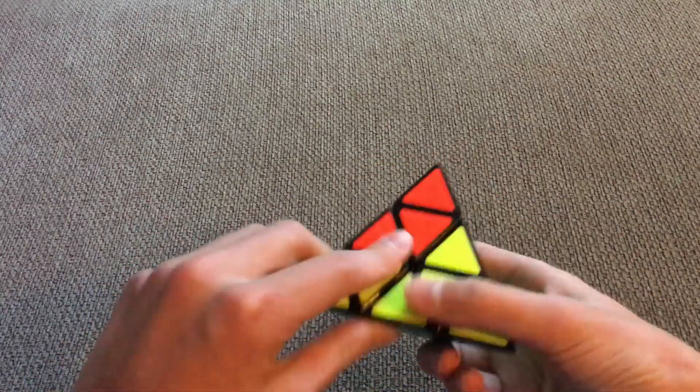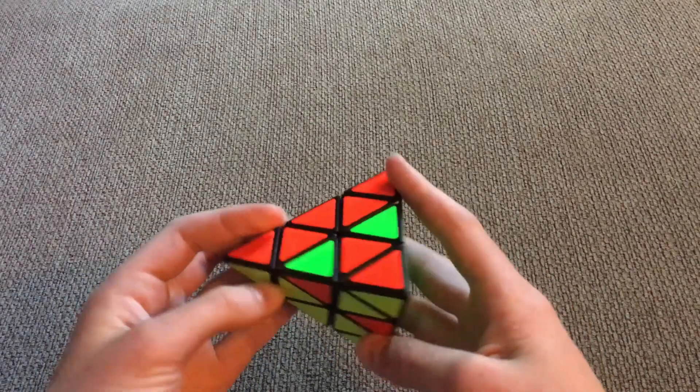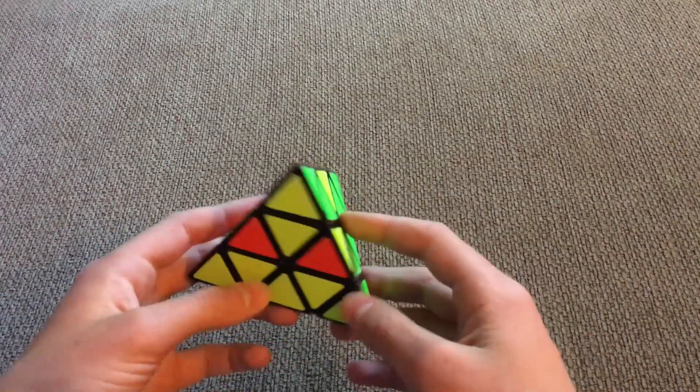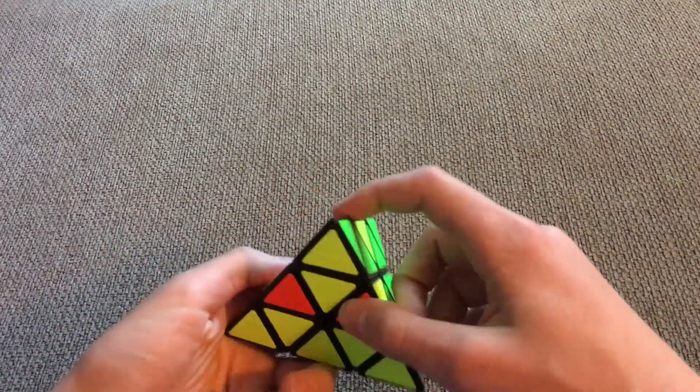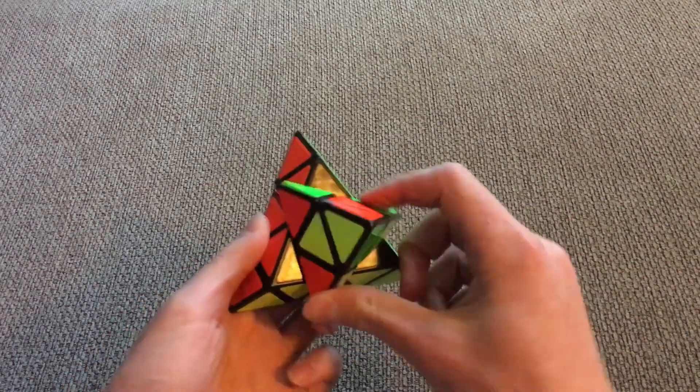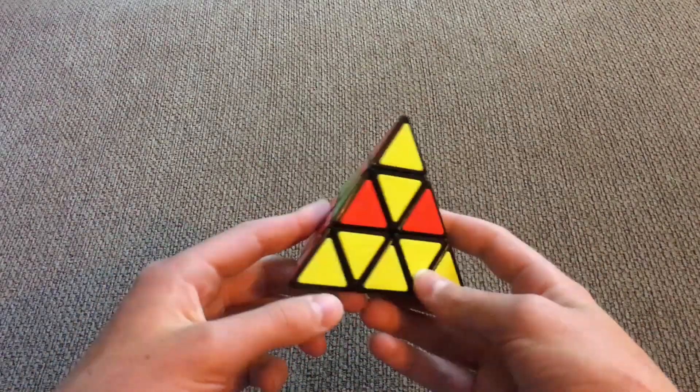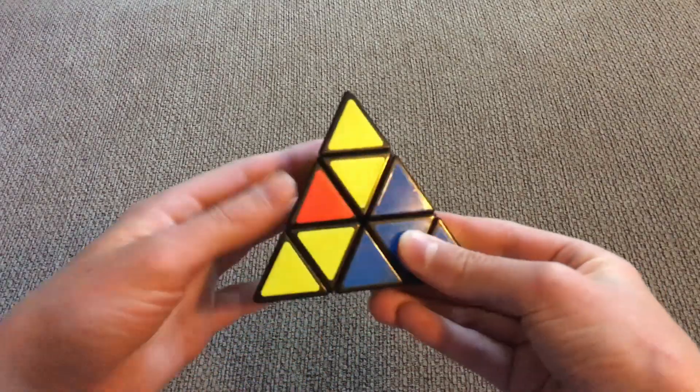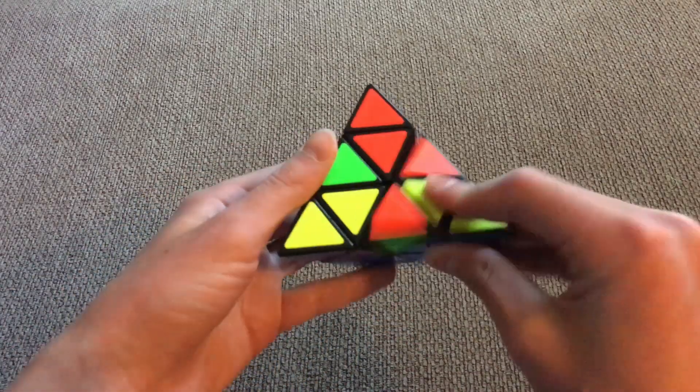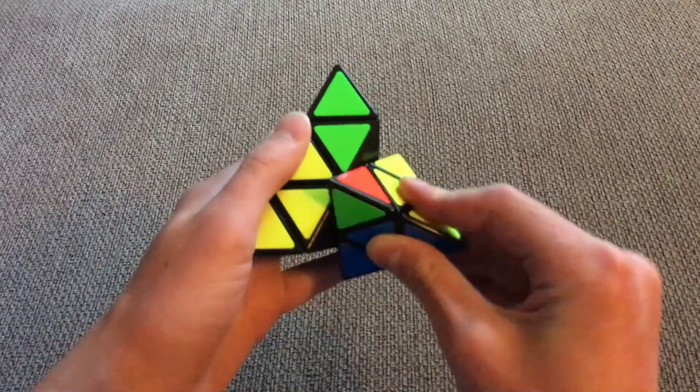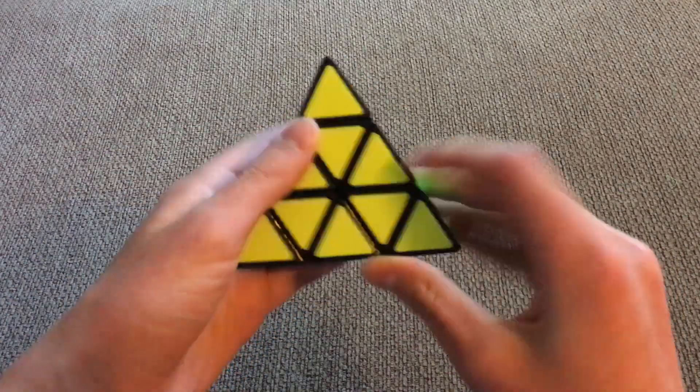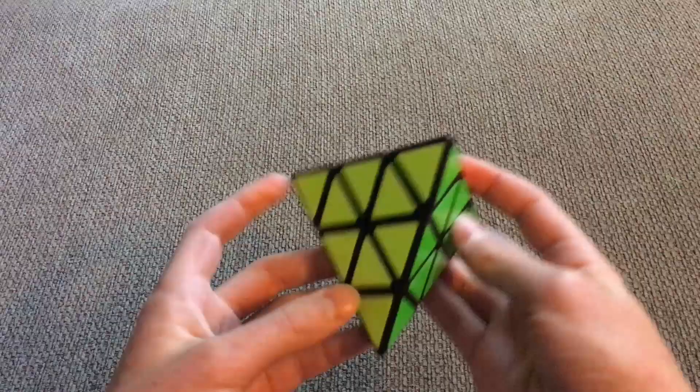Now, after placing in our blue edge, you can see that we return to a solvable state which we have seen earlier. In this case, I see that I have to turn to the right, so I will do the right side algorithm, which would be to lift up the right, bring the top to the left, right down, top left again, right up, top left, and right down. And this will solve my pyraminx.